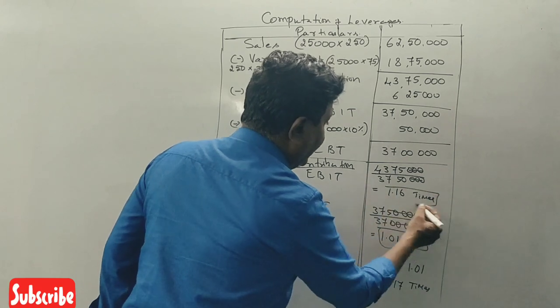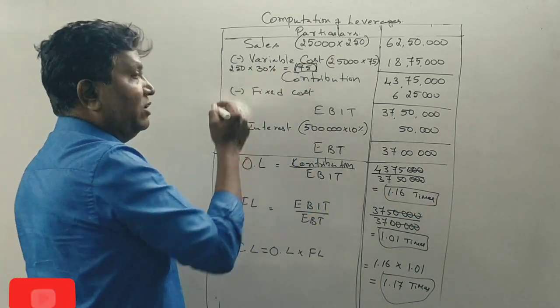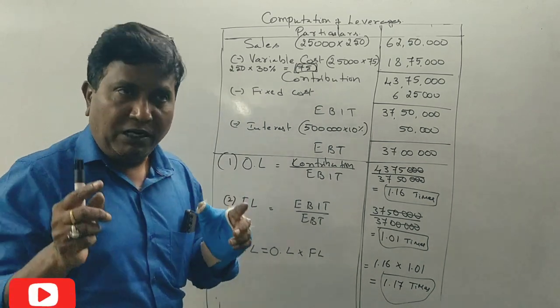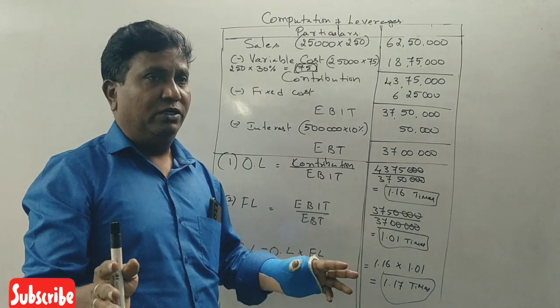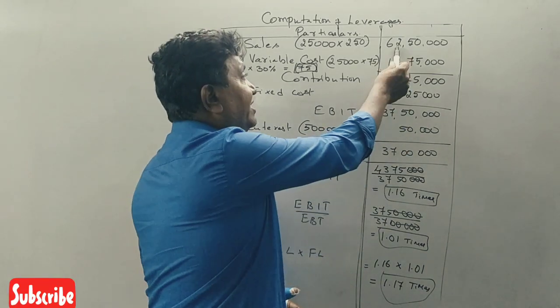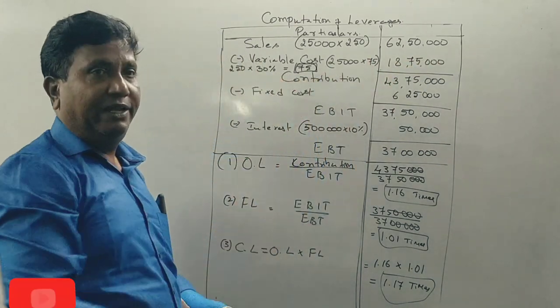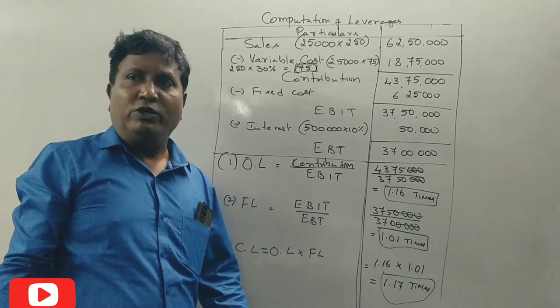Now, if you look at this, you can use the variable cost directly. You can take 30% of the sales, which is 30% of Rs. 62,50,000, to get Rs. 18,75,000 as the variable cost.